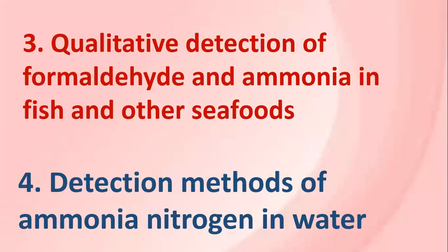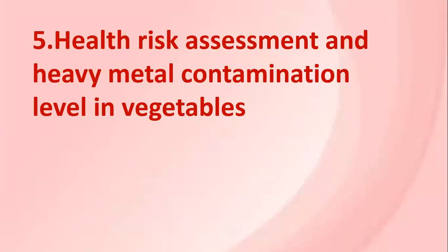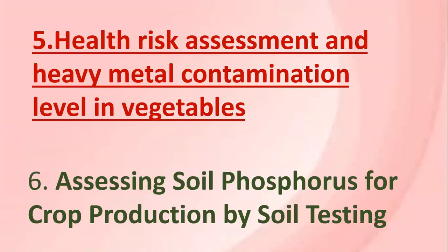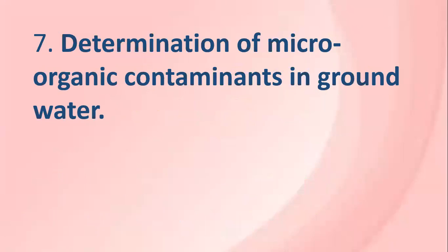Fourth one: detection methods of ammonia and nitrogen in water. Fifth one: the health risk assessment and heavy metal contamination level in vegetables. Sixth one: assessing soil phosphorus for crop production by soil testing. Seventh one: determination of micro-organic contaminant in groundwater.